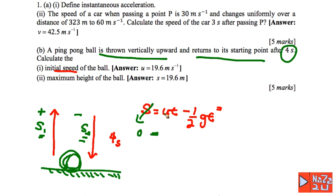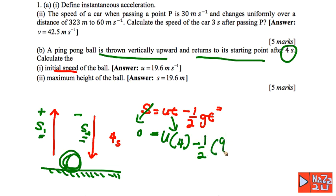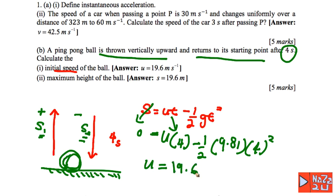To find the initial speed, use the equation s equals ut minus half g t squared, with s equals 0. The total time t is 4 seconds and g is 9.81 meters per second squared. Substituting these values and solving for u, the initial speed is 19.6 meters per second.